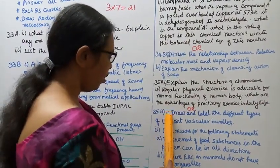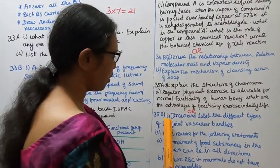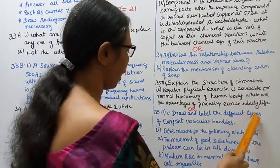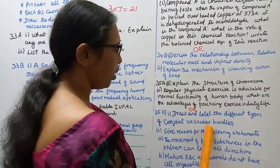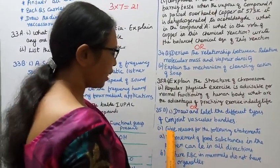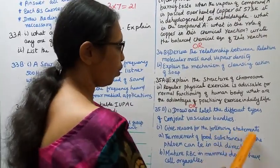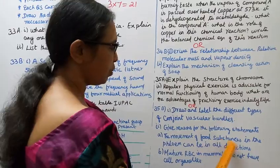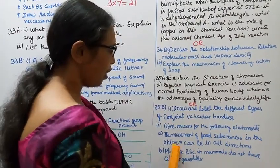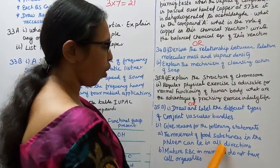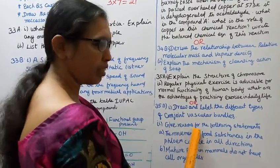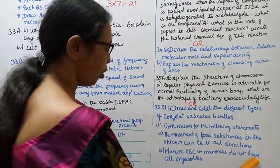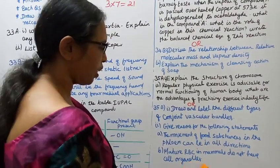Question 35B, first subdivision: Draw and label the different types of conjoint vascular bundles. Second subdivision: Give reasons for the following statements. A) The movement of food substances in the phloem can be in all directions — give reasons. B) Mature RBC in mammals do not have cell organelles.